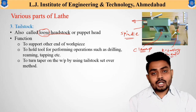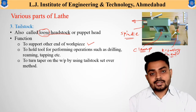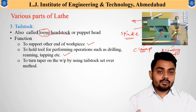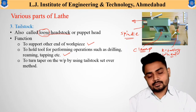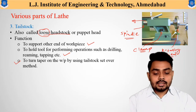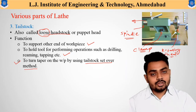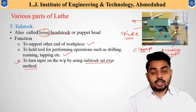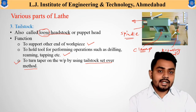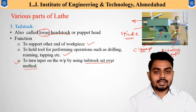The important functions of the tailstock are: first, it supports the other end of the workpiece when the workpiece is longer in length. Second, it holds tools for performing different machining operations such as drilling and reaming. Third, to turn a taper on the workpiece, the tailstock is adjusted during setup using the tailstock set over method. So in simple terms, the tailstock is useful for holding longer workpieces, supporting tools for certain operations, and enabling taper turning via the tailstock set over method.